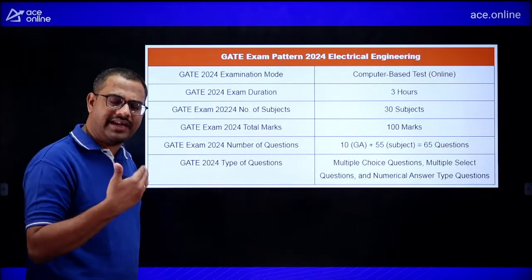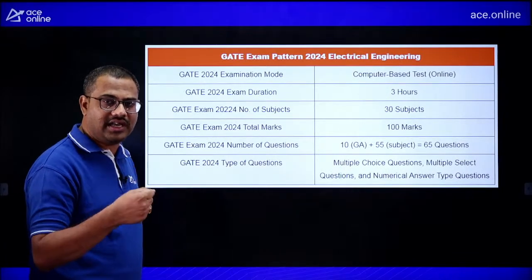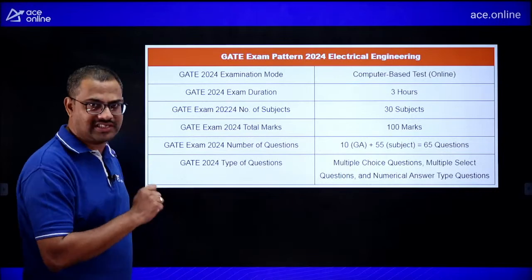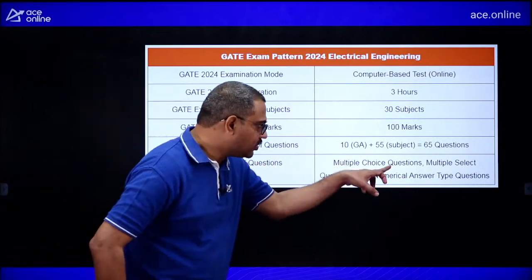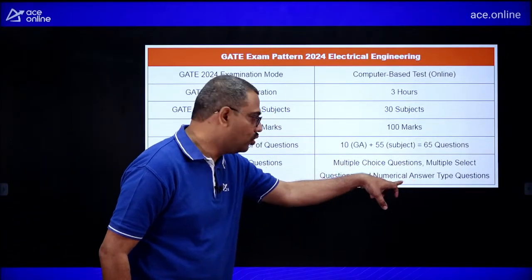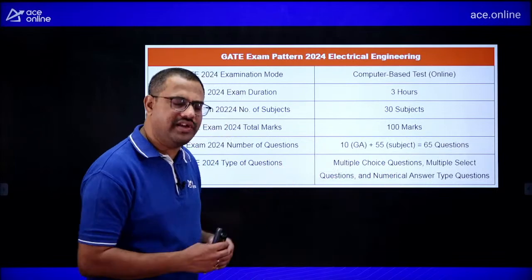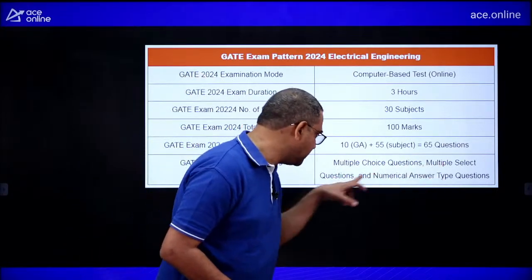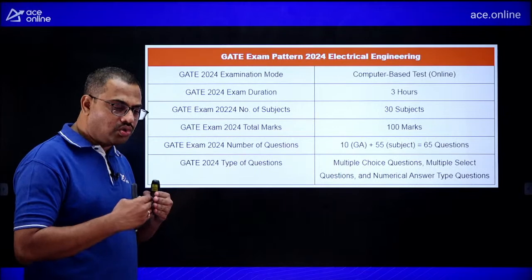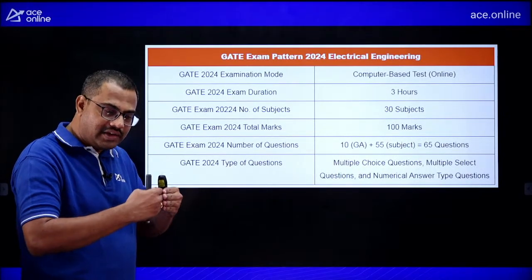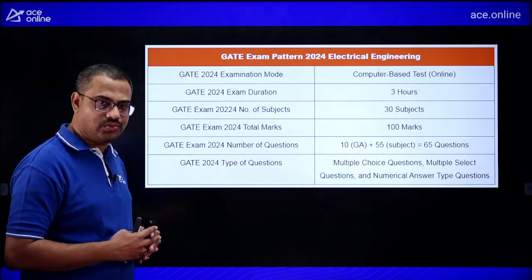For newcomers — students in third year or final year of B.Tech attempting GATE for the first time — this exam structure is very important to understand. There are three types of questions: Multiple Choice Questions (MCQ), Multiple Select Questions (MSQ), and Numerical Answer Type (NAT) requiring a virtual calculator. MSQ was recently added to make the exam more competitive and to better differentiate students.